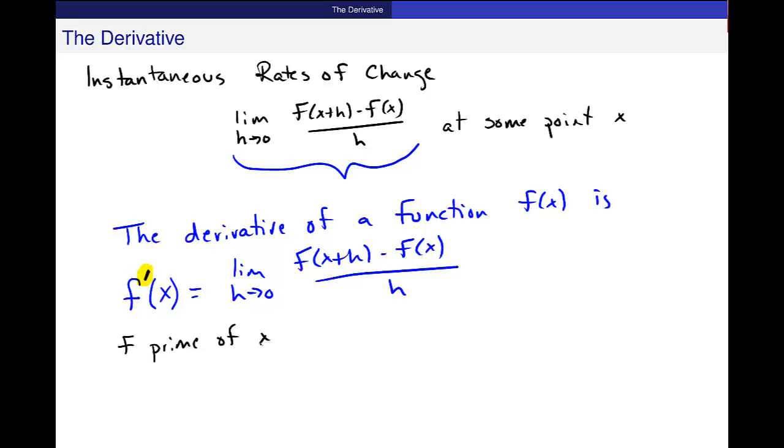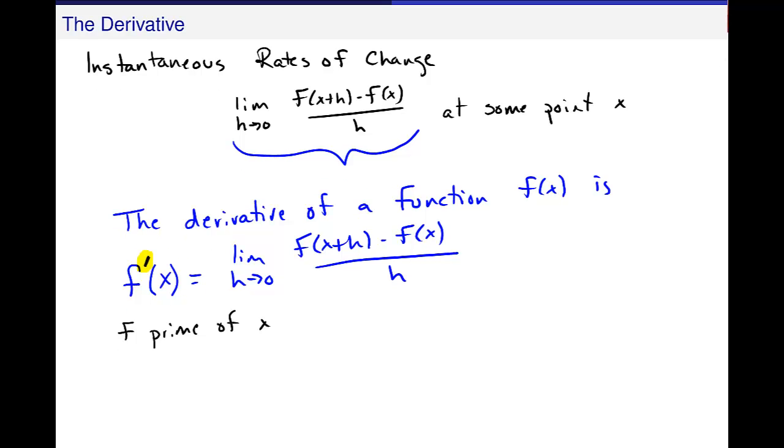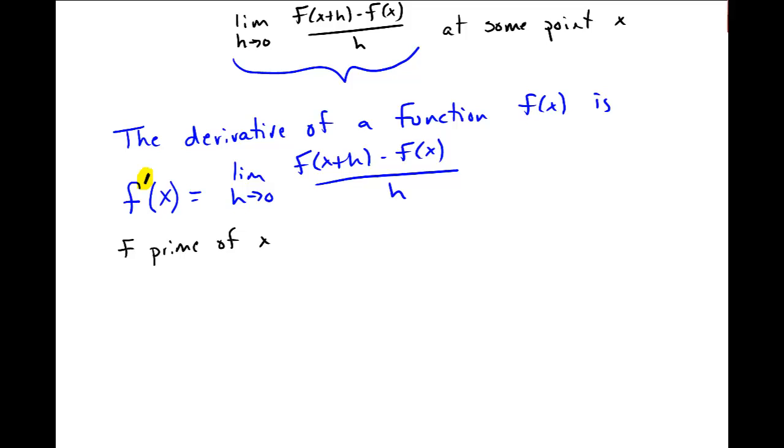Now, we know from everything that we've done before that this gives us two pieces of information about this function. That we can plug in a point. So I can plug in a point x is equal to a, and then this is the instantaneous rate of change of f at some point a.